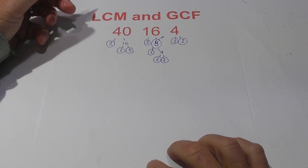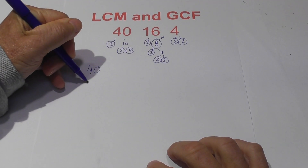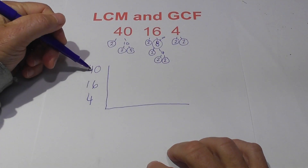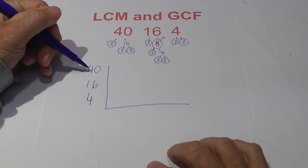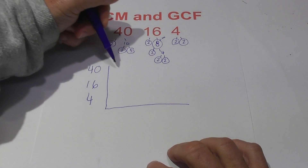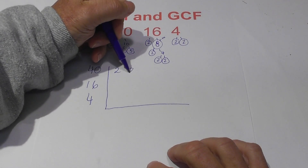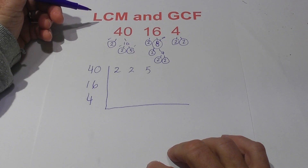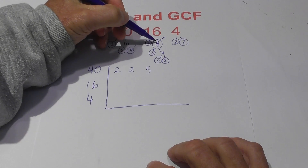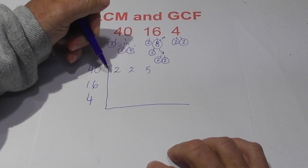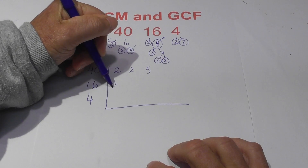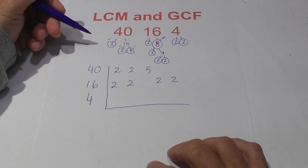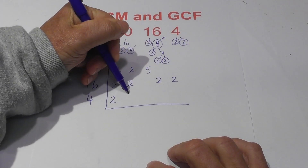Now let's move on to 3 numbers and apply the same thing. I have already done the factor tree, so I am going to create my chart for 40, 16, and 4. The order does not matter. I have got a 2, 2, and then a 5 — put a check by them to be careful. I have all the prime numbers circled. Then I am going to write these out: I have got a 2, a 2, I am going to skip the 5 to keep the same numbers in the columns, and then for 4 I have got a 2 and a 2.